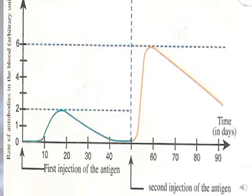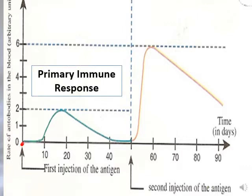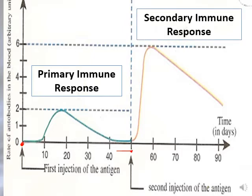This graph shows the amount of antibodies in arbitrary units (AU) as a function of time in days. We inject the antigen at time zero — this is the primary immune response. At day 50 we inject the same antigen for the second time, and the resulting immune response is the secondary immune response.